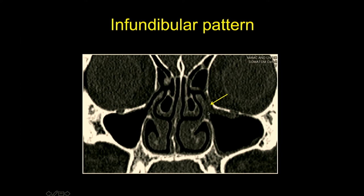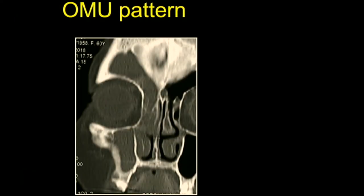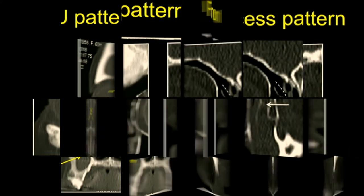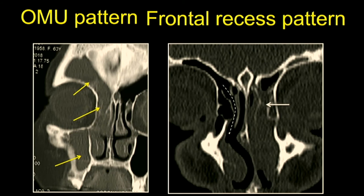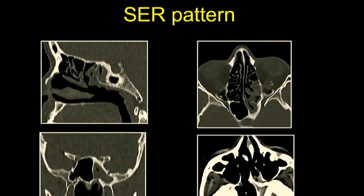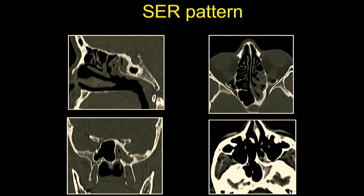This is the infundibular pattern of disease, where disease involves the maxillary infundibulum and there is mucosal thickening in the maxillary sinus, with the normal infundibulum visible on the right side. The OMU pattern involves the entire osteomeatal unit as a 3D space and obstructs the frontal, anterior ethmoidal, and maxillary sinuses. The frontal recess pattern involves the frontal recess on the left side, with the right side being normal, and hence disease is limited to the left frontal sinus.